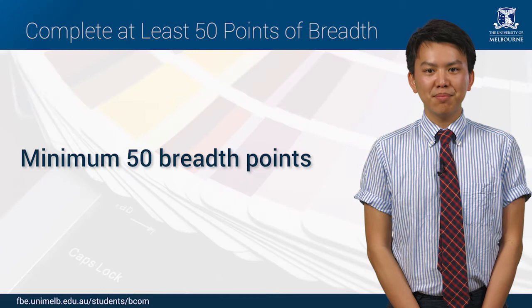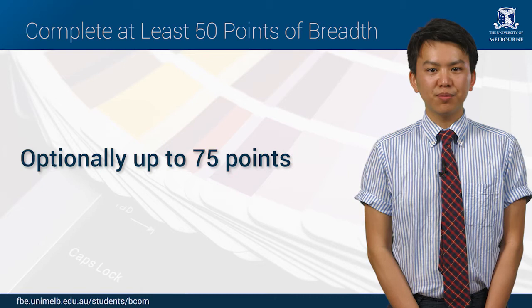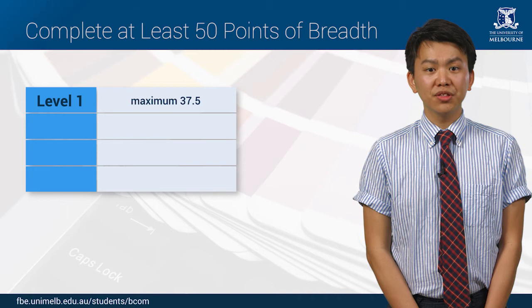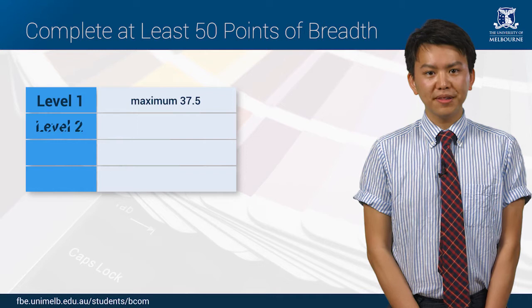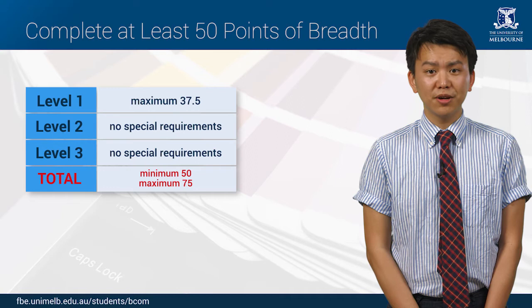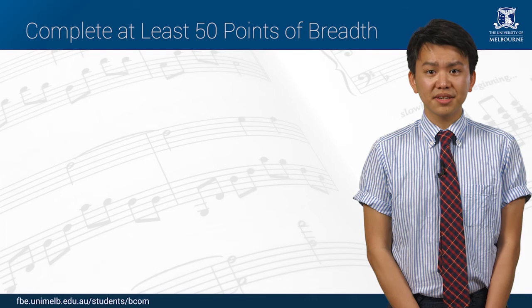To meet your points requirements for the BCom you will need to complete a minimum of 50 breadth points or four subjects, with the option to take up to 75 points or six subjects. One key thing to remember is that you cannot complete more than 37.5 points — that's three subjects — of breadth at level one. Breadth subjects are generally subjects chosen from outside the Faculty of Business and Economics, or as we call it FBE. For example, you might choose a music, a science, or a law subject — these are subjects taught by different faculties.